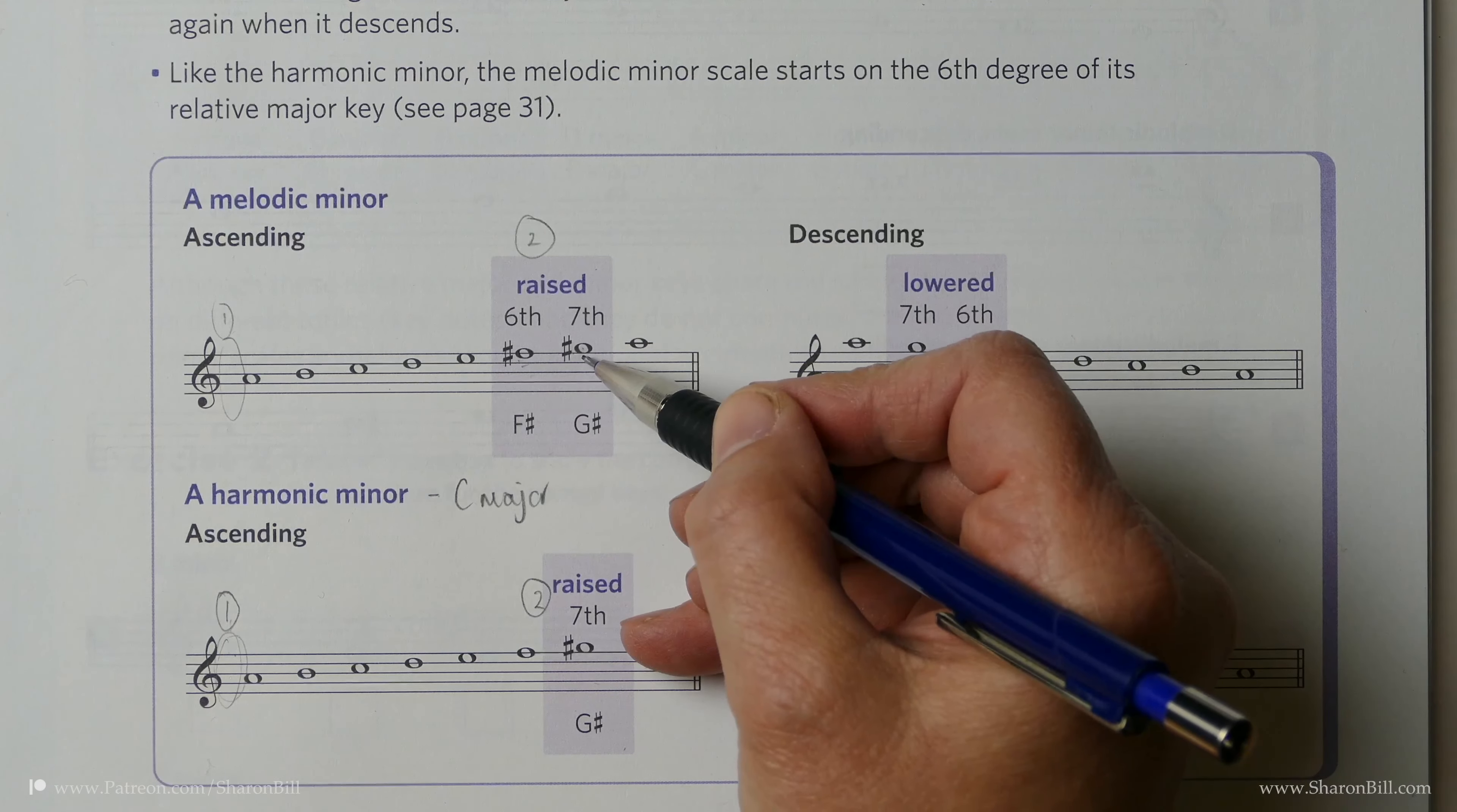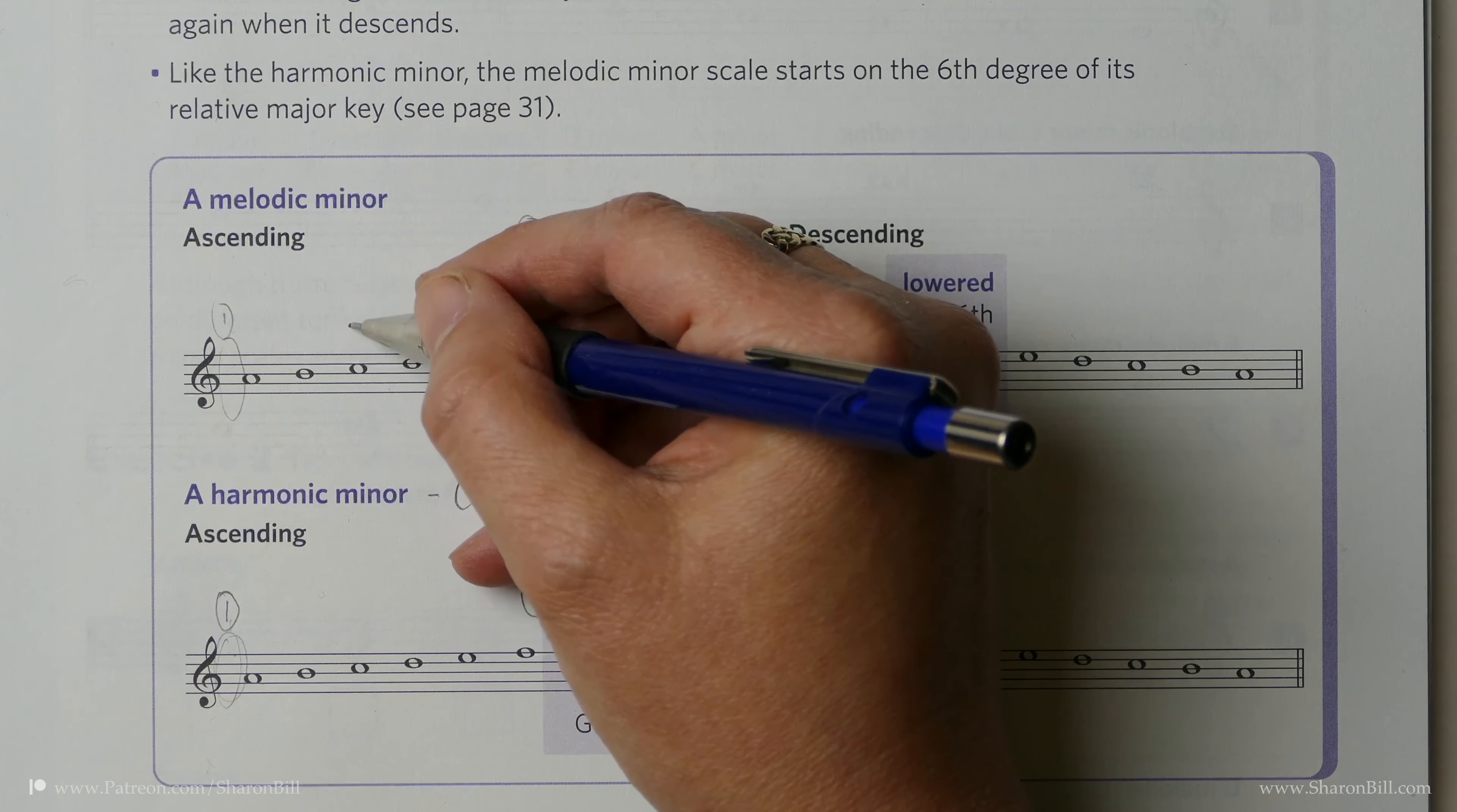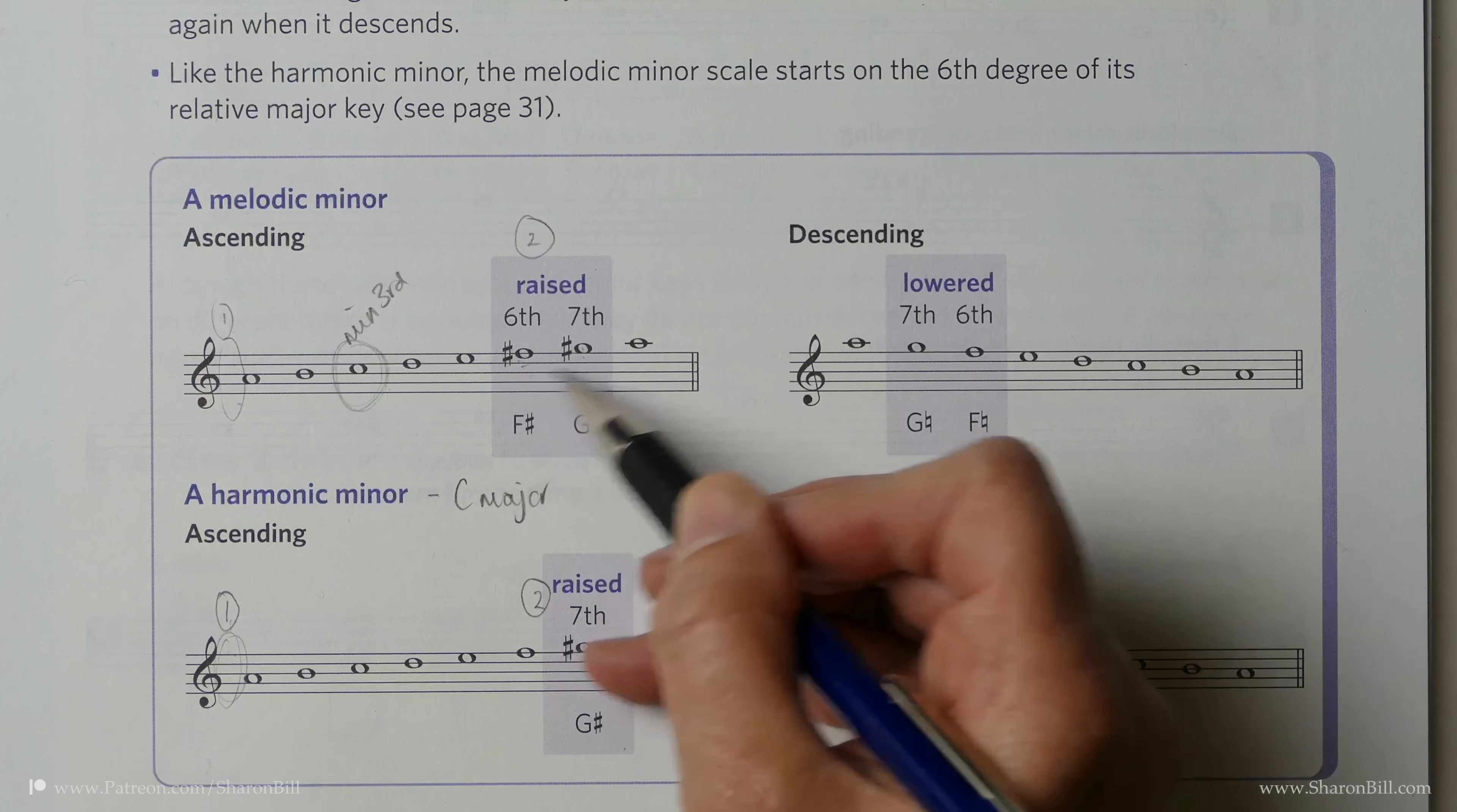However, if you notice, this then almost becomes like a major, because A major has F sharps, C sharps, and G sharps. So the only thing here is this minor third: one, two, three is C natural instead of C sharp. Other than that, it's exactly like the major scale at the top end of the scale.